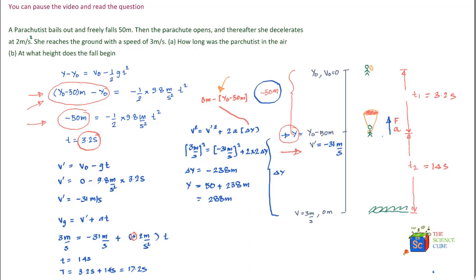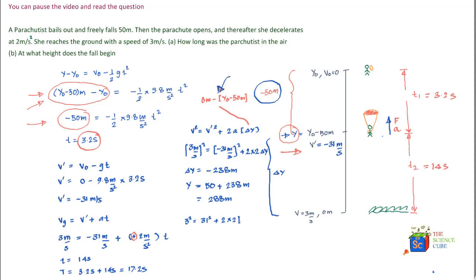Let's verify using an alternative approach by substituting values directly: 3² equals 31² plus 2 times acceleration times (0 minus (y0 minus 50)), which simplifies to minus 952 divided by 4 equals 50 minus y0, giving y0 equal to 288 meters. Both approaches give the same answer, so you can choose whichever suits you.